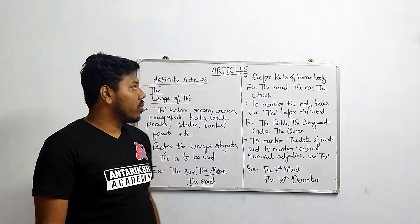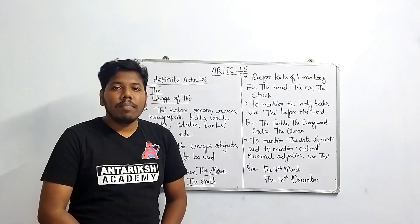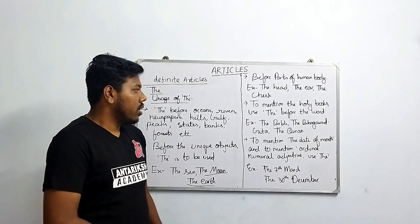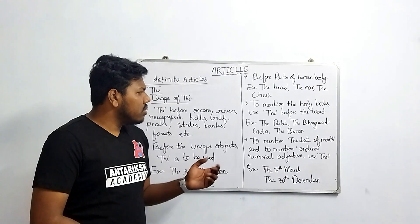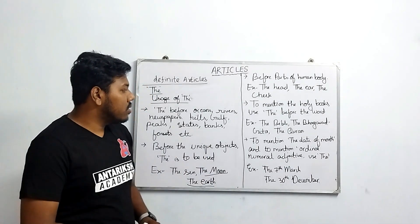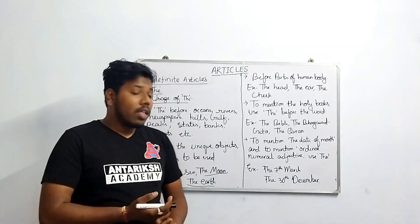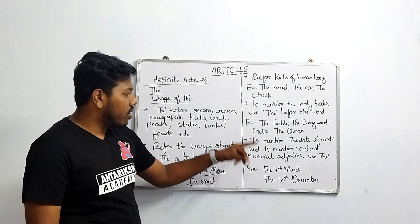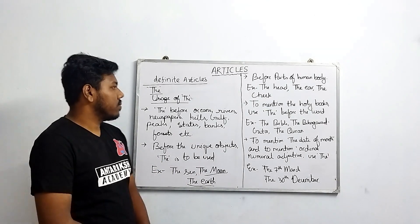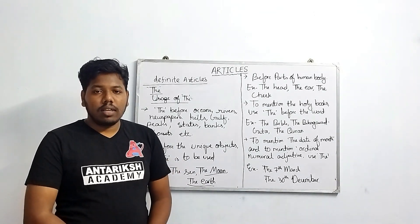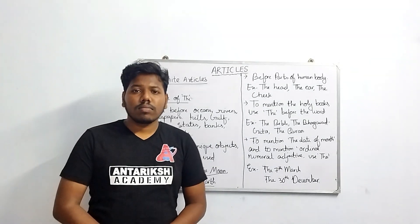The next use is 'the' before the names of holy books. For example: the Bible, the Gita, the Quran. Also, 'the' is used to mention the date of a month or in numeral adjectives — for example: the 7th of March, the 30th of December.